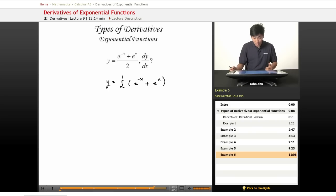All we're going to have to do is apply the exponential derivative rule directly. So, dy/dx equals 1 half constant times,